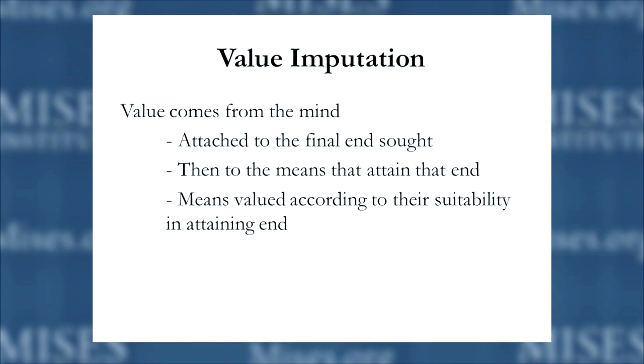Rothbard gives an example in Man, Economy, and State: imagine you're hungry and want a ham sandwich. The ham sandwich is the final good — what Menger called the lowest order good — the consumer good that will alleviate your hunger. But there are all sorts of input factors or higher order goods necessary to create it: bread, lettuce, ham, butter. You combine all these higher order goods to produce the lowest order good. The question becomes: how do we assign value to these higher order goods? Their value is a cost associated with them — the bread, butter, ham, and lettuce are costs you incur to produce the final good, the ham sandwich.